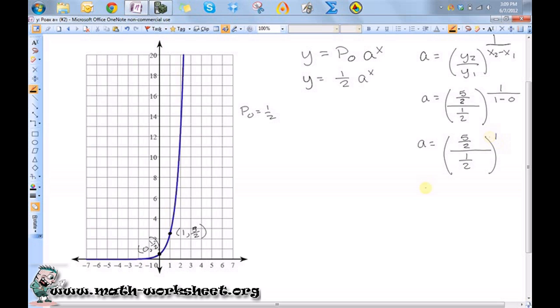That exponent isn't necessary. To perform this division, I'll rewrite it as the product: 5/2 times the reciprocal of 1/2, which is 2/1. Notice the 2's will cancel out, so a is equal to 5.